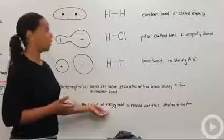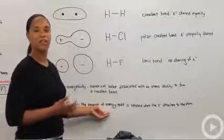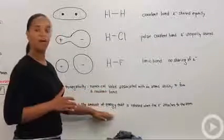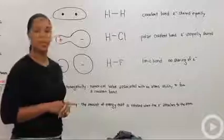Versus electron affinity is the amount of energy that is released when an electron attaches to an atom. Like our halogens have high electron affinities because they love negative energy being towards them, but they're different numerical values. And that is electronegativity.